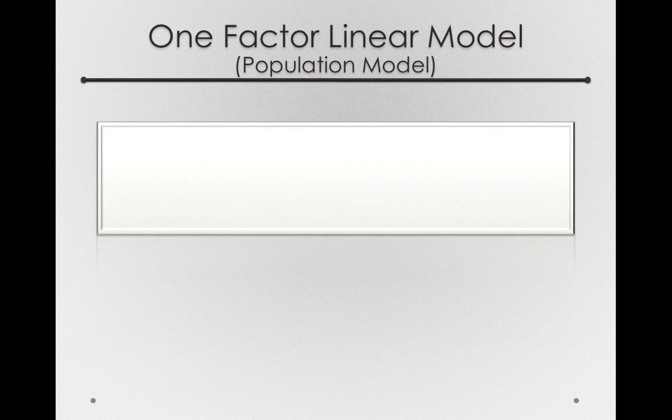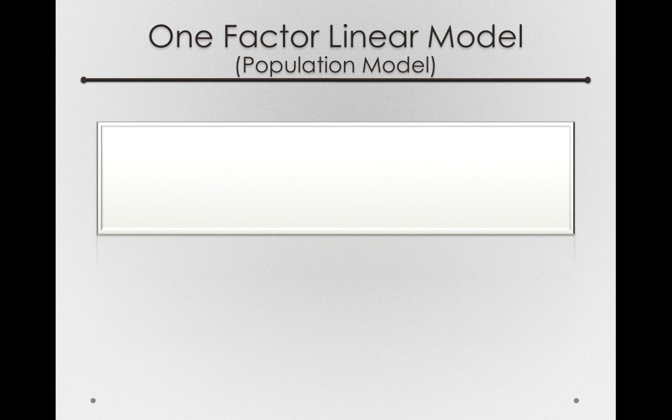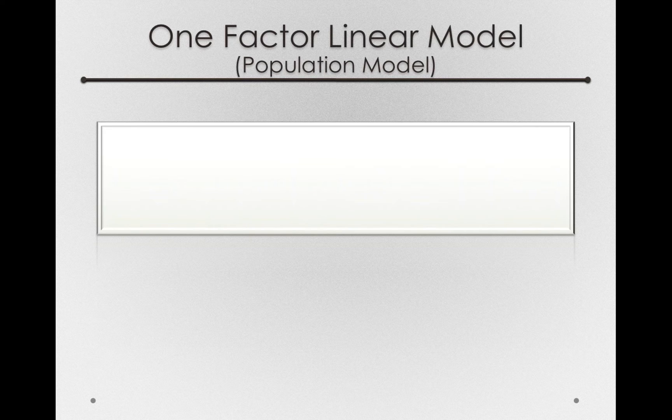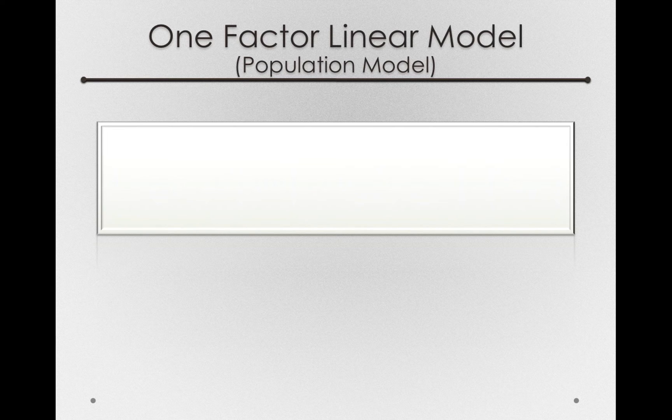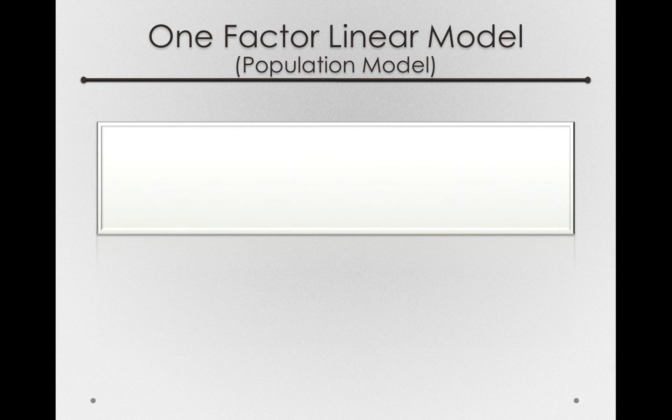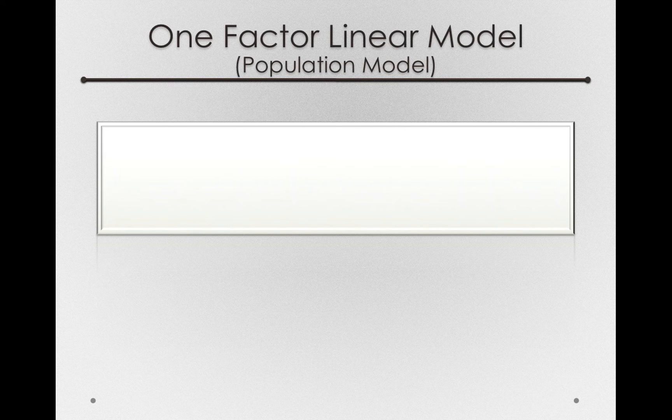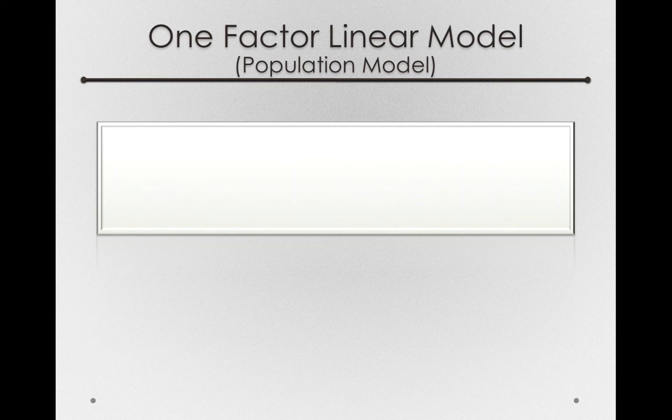So in this case, this will be our one-factor linear model. And it's one factor because we're only using one thing to make a prediction about the cost of flight. We're using what airline they were on. And it's a factor and not a predictor because the groupings are actual different groups. They're not something continuous like number of minutes on the flight.